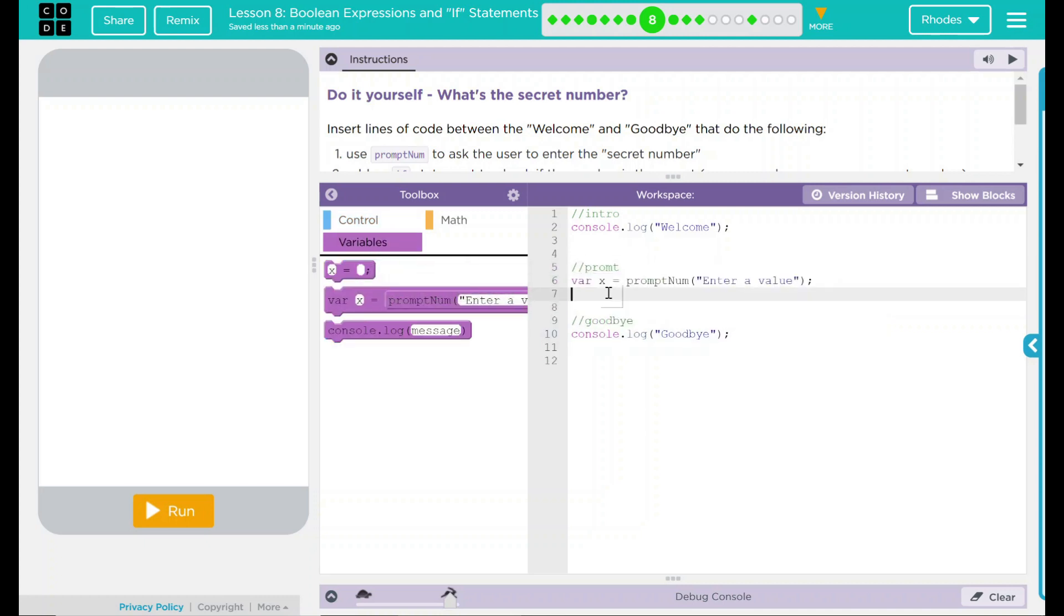So let's drag our prompt in here and this one is going to be secret. To display, let's say guess what the secret number is and a bunch of question marks. Our variable is secret and that's going to bring our prompt box up there.